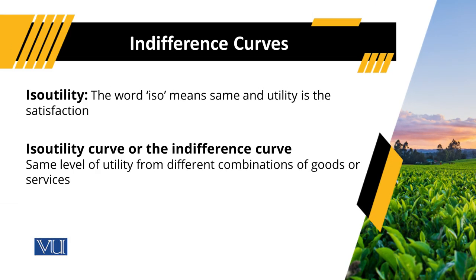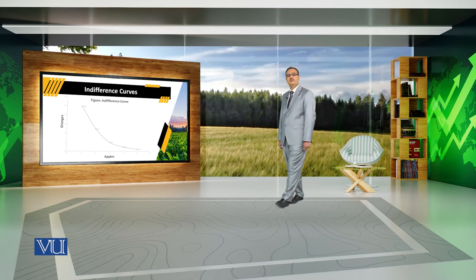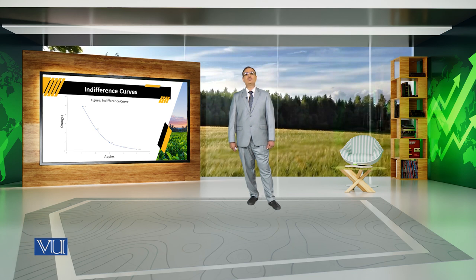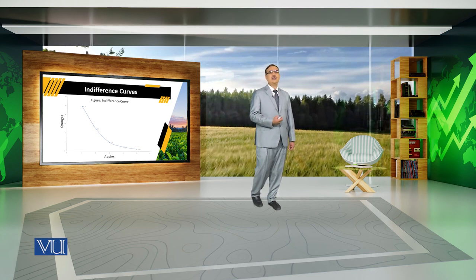To elaborate the order of consumer preferences, we use the concept of ISO utility. ISO means 'same' and utility means 'satisfaction.' So an ISO utility curve, or indifference curve, is a curve that shows different combinations of commodities against which a consumer is getting the same satisfaction. To keep things simple, we assume the consumer is getting satisfaction by using only two commodities. In real life, a consumer uses a large number of commodities, but to keep things understandable, we start with the assumption that the consumer is getting satisfaction from apples and oranges.